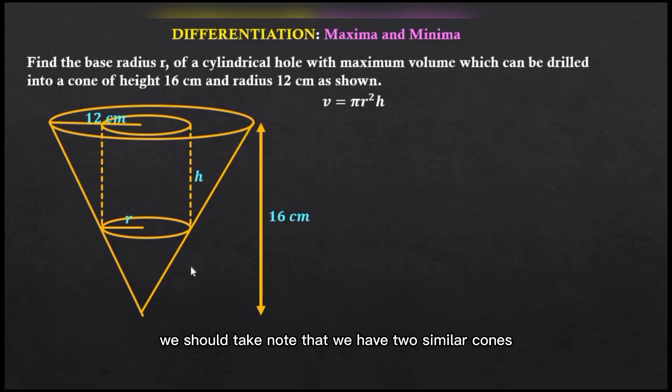In this diagram we should take note that we have two similar cones: the bigger cone of base radius 12 centimeters and the smaller cone whose base radius is r. Similarly, the height of the bigger cone is 16 centimeters.